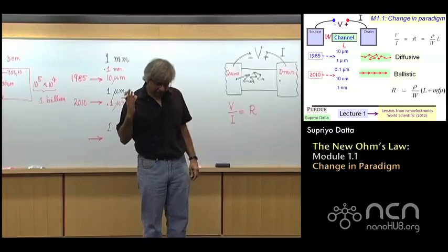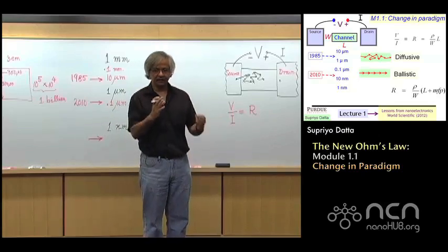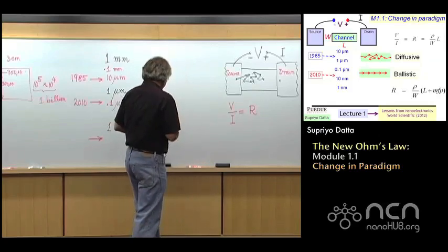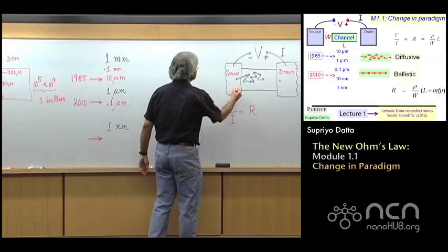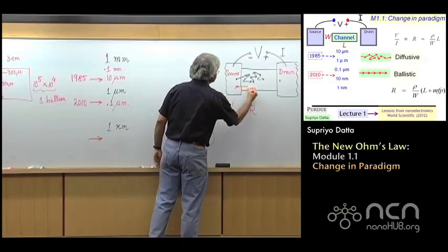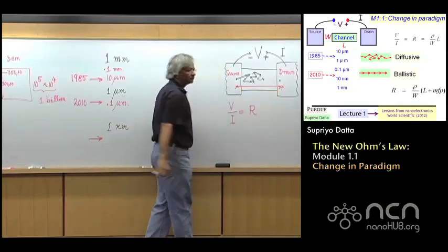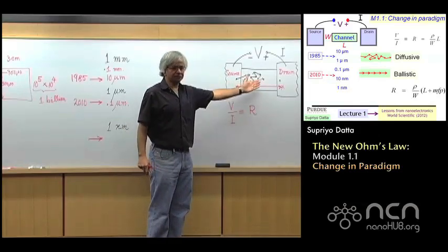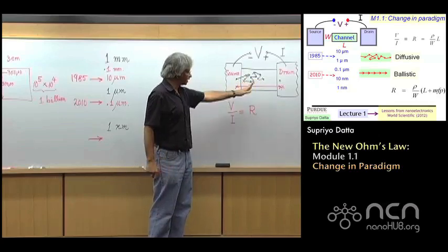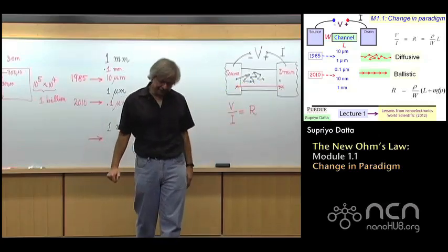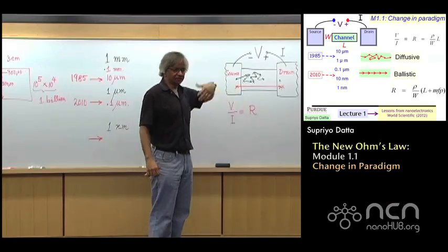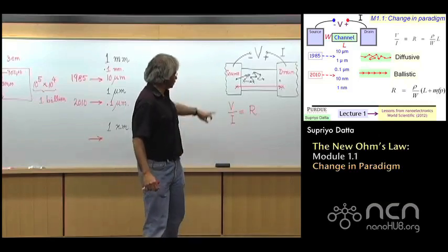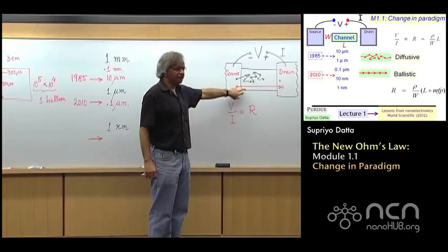By contrast, when you look at small devices of today, and even smaller devices, electrons tend to go directly from the source to the drain. I mean, the smaller you make it, the more correct this picture is, that an electron doesn't hit anything, just goes straight through. And the technical name for that is people call that ballistic transport. It's like a bullet, electron just goes straight through.